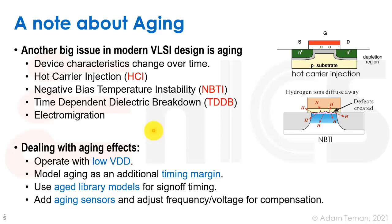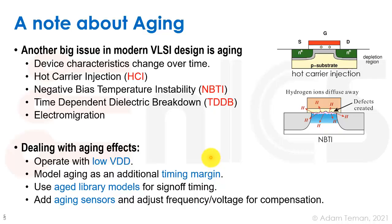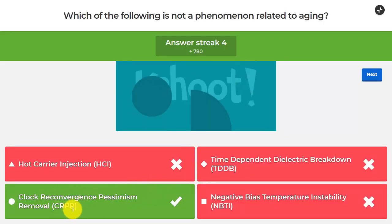These aged corners are obviously worse. You need to decide whether you'll accept reducing the chip's operating frequency after a certain amount of time, or whether you must always meet timing in the worst-case aged scenario. If you want to dynamically adjust voltage and frequency based on chip aging, you need aging sensors such as ring oscillators, measuring them periodically to determine if frequency should be reduced or voltage raised.